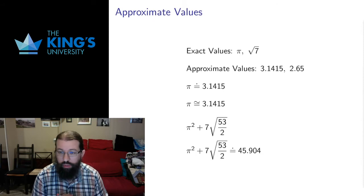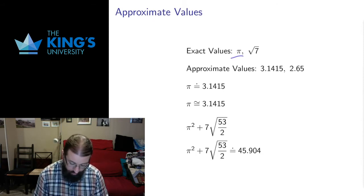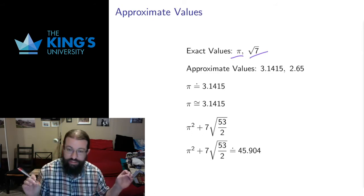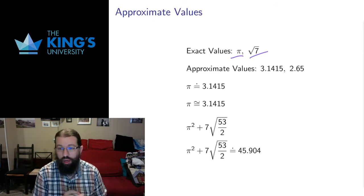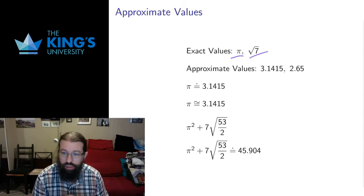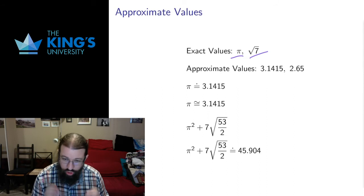So by exact values, I refer to the symbols that stand for the whole number. So if I write the symbol π, or the symbol √7, that symbol means exactly the number π in all its infinite complexity, exactly the number √7 in all its infinite complexity. There's no loss of information.